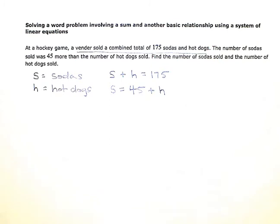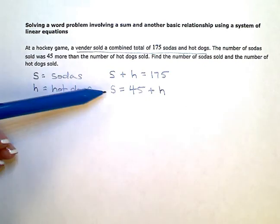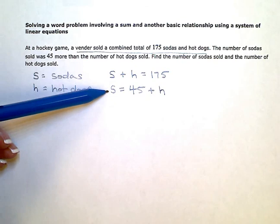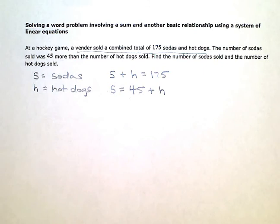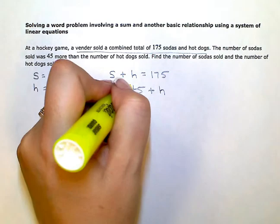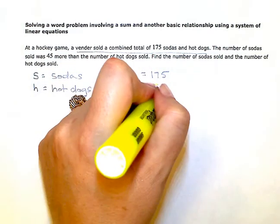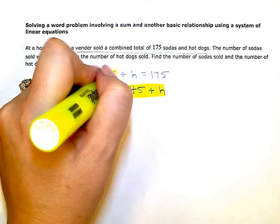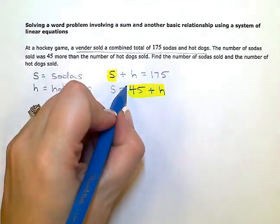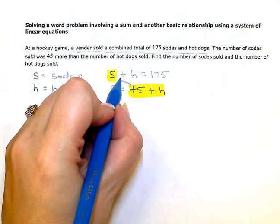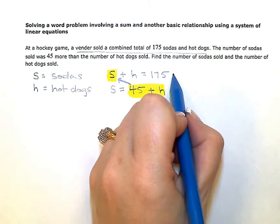Find the number of sodas sold and the number of hot dogs sold. So I have a system of equations here I just need to solve. My bottom equation tells me that wherever I have an S, it's equal to 45 plus H or can be substituted with the expression 45 plus H. So I'm going to substitute the 45 plus H into the top equation in place of that S.